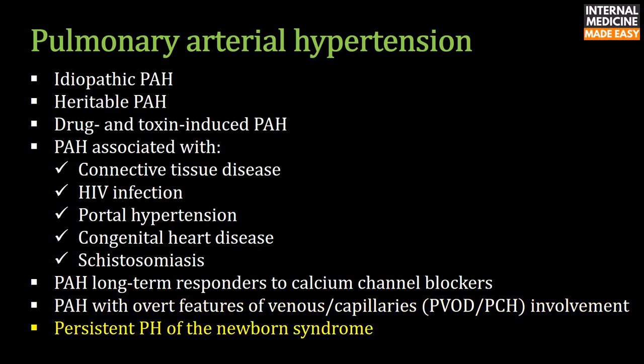Pulmonary hypertension with reduced pulmonary blood flow is a normal physiologic state in the fetus because the placenta, not the lungs, serves as the organ of gas exchange. Disruption of normal neonatal circulatory transition results in failure to resolve fetal pulmonary hypertension and leads to its persistence.